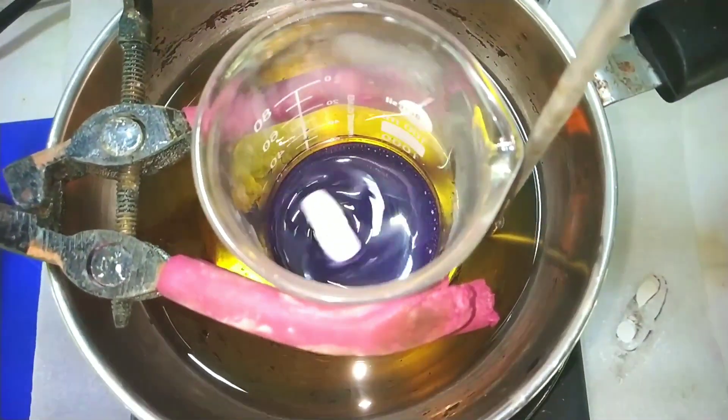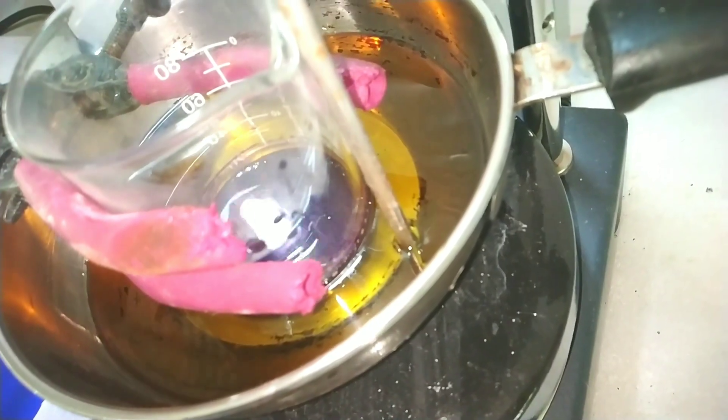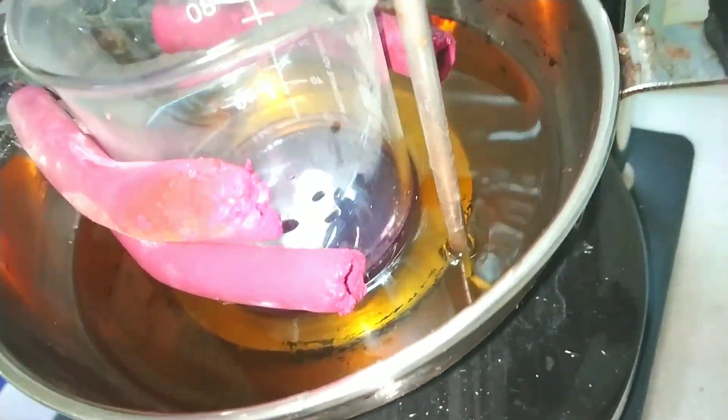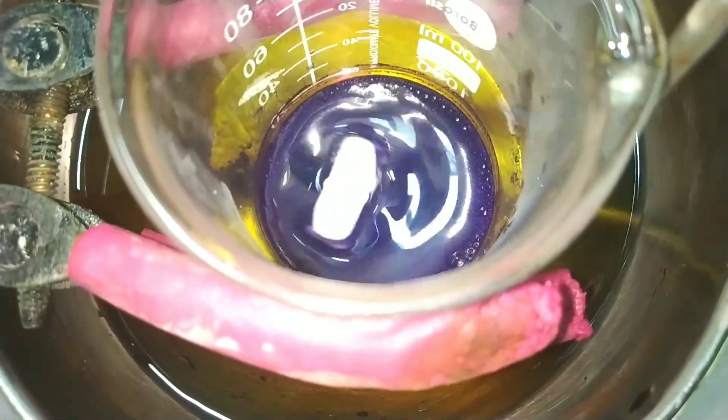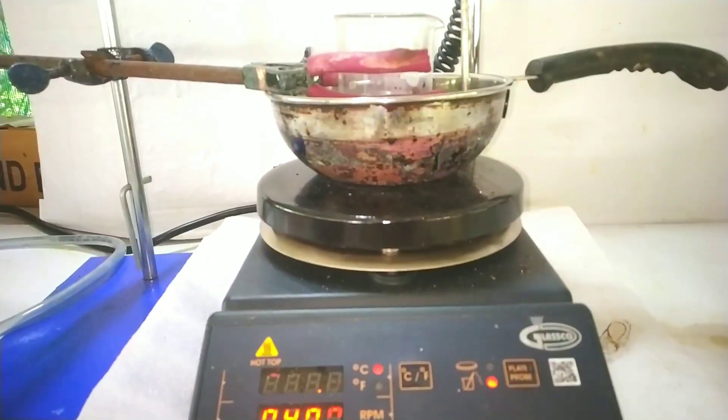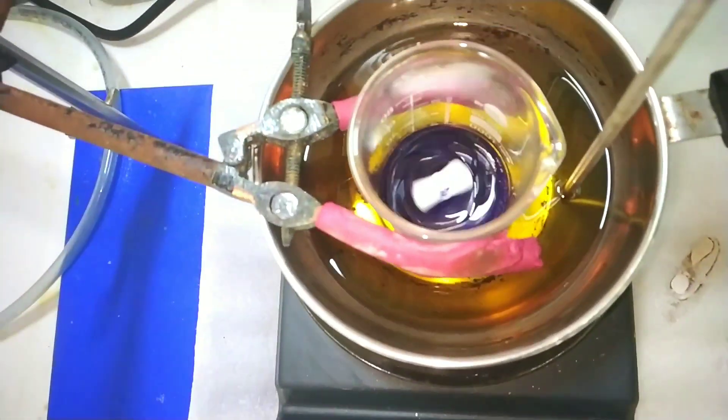After about one hour, you can already see a purple color starting to develop in the beaker. I'm not sure of the exact equation of what is happening here. Anyway, the ammonium dihydrogen orthophosphate reacts with orthophosphoric acid and manganese dioxide at temperatures of around 230 degrees Celsius to form this compound.